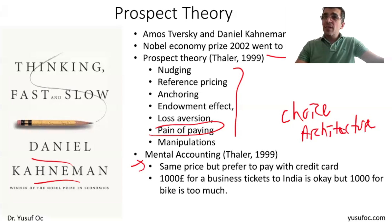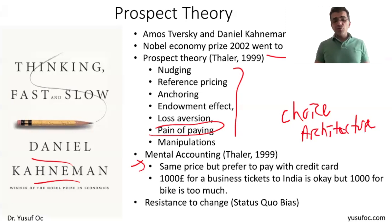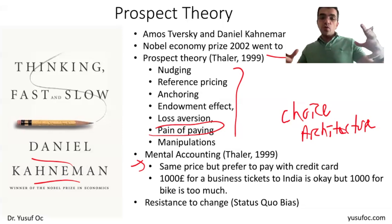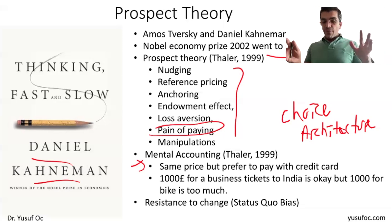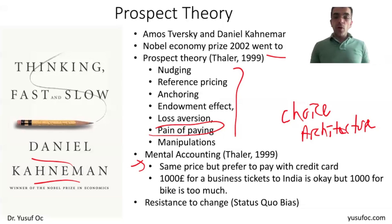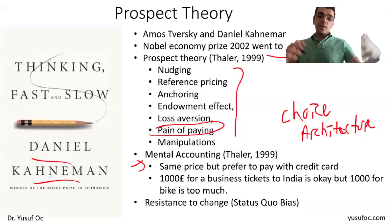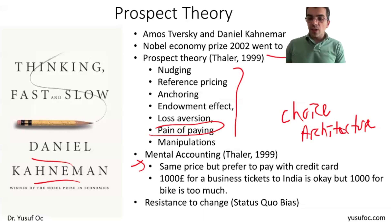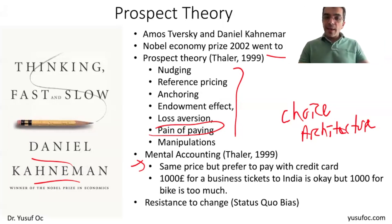There are many other examples we see every day, like resistance to change — also called status quo bias — where we prefer things to stay as they are. A famous failure example is New Coke: even though field tests found the new formula tasted better, when it launched on shelves people still preferred old Coke because they were resistant to change. These phenomena were explained by prospect theory contributors and we'll cover them in upcoming videos.